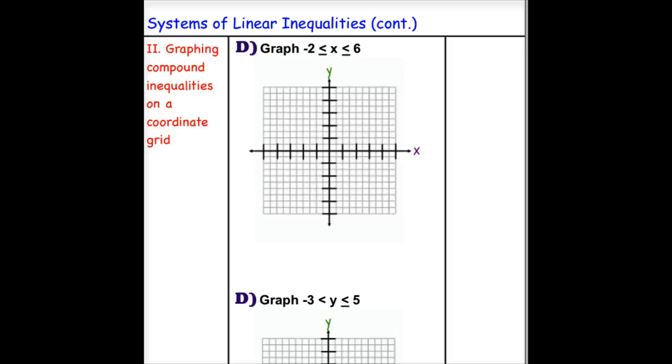Now we're taking a look at some compound inequalities and graphing them on the coordinate grid. If you recall from before, when you had a compound inequality such as -2 ≤ x ≤ 6, you knew that x fell between -2 and 6. So now it's just a matter of graphing this in a two-dimensional plane as opposed to the one dimension of your number line.